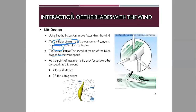The lift device also falls under the category of interaction of wind blades with the wind. Using lift, the blades can move faster than the wind — unlike drag devices where blade speed cannot exceed wind speed. Lift-based wind turbines are more efficient in terms of aerodynamics and the amount of material needed for the blades. Here we also talk about the tip speed ratio.